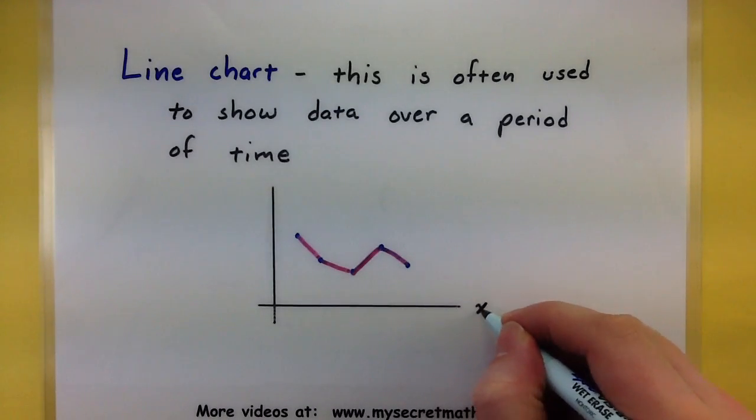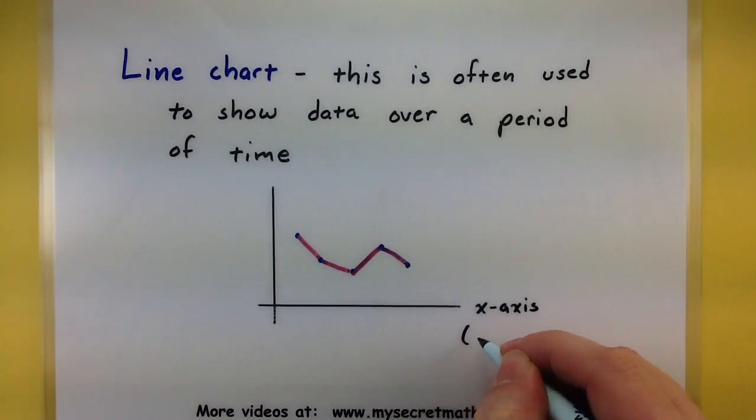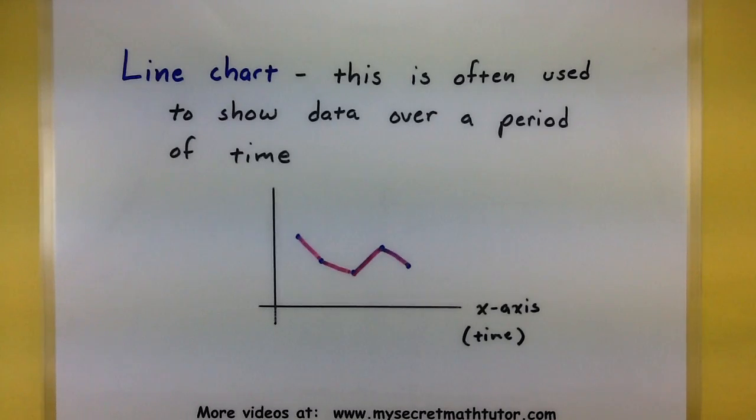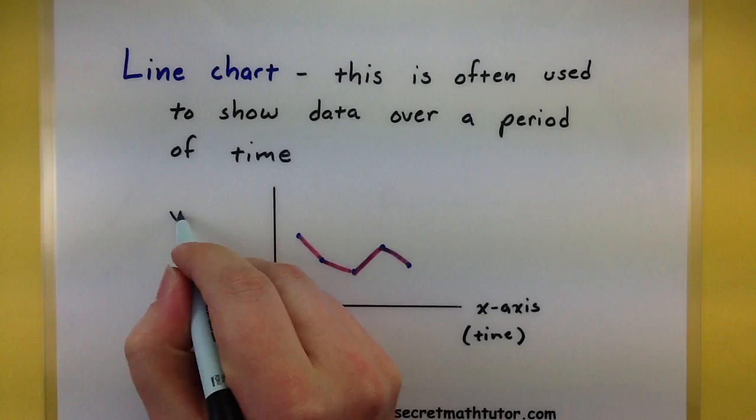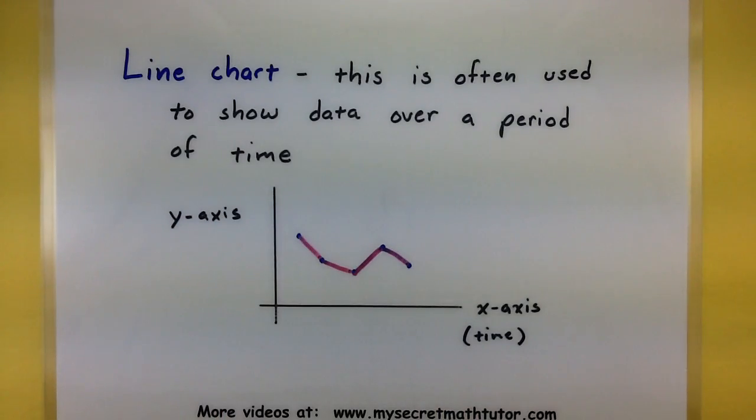Along the bottom, this is our x-axis. This is where we will usually use some sort of time. Remember, it doesn't necessarily have to be, but usually that's what we use these for. And of course, our y-axis will be our vertical line. Alright, so let's give our example a try and see how we can actually build this thing.